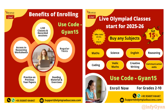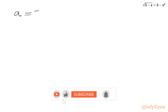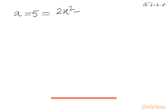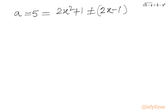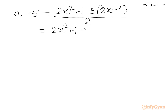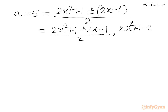Let us come back to our problem. So A equals 5, and I can write: with the plus sign, A equals (2x² plus 1 plus 2x minus 1) over 2, and with the minus sign, A equals (2x² plus 1 minus 2x plus 1) over 2.